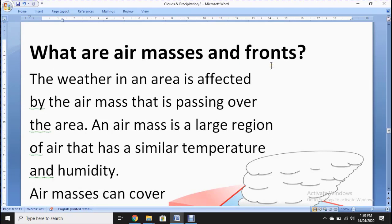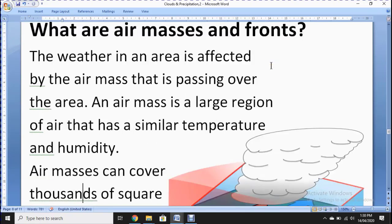First question: What are air masses and fronts? The weather in an area is affected by the air mass that is passing over the area. If the air is cool, it changes the weather of that land. If it's hot or dry, it also affects that area.